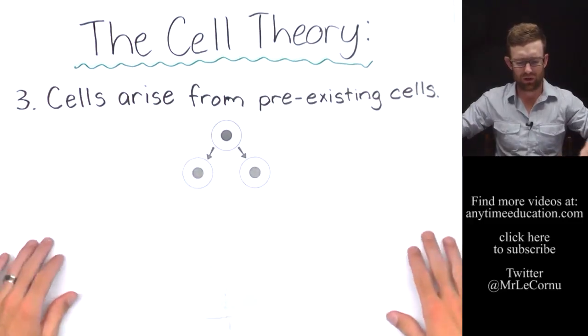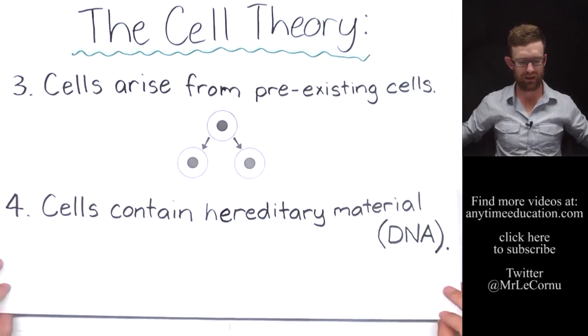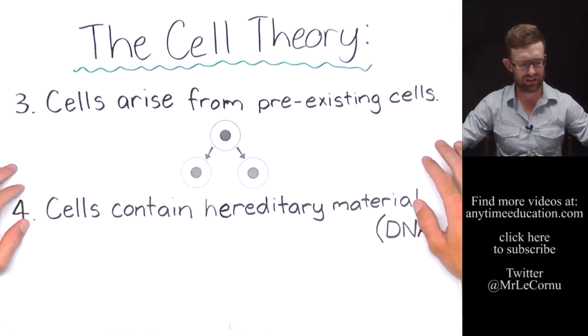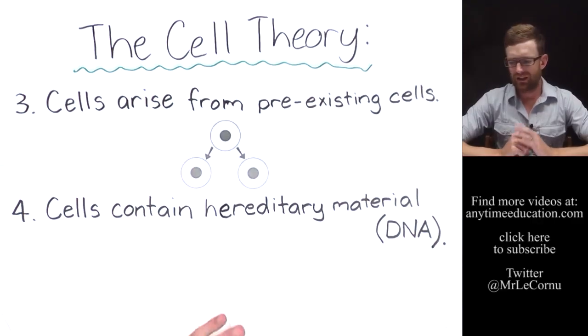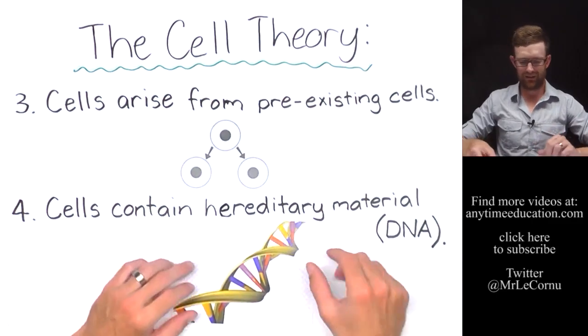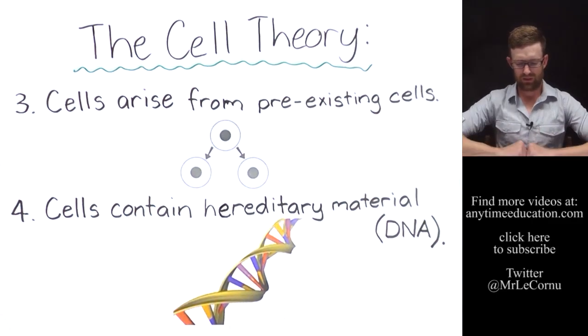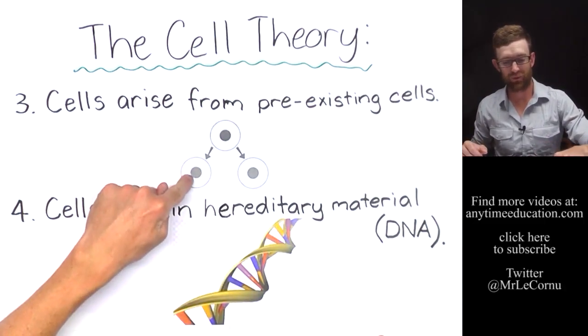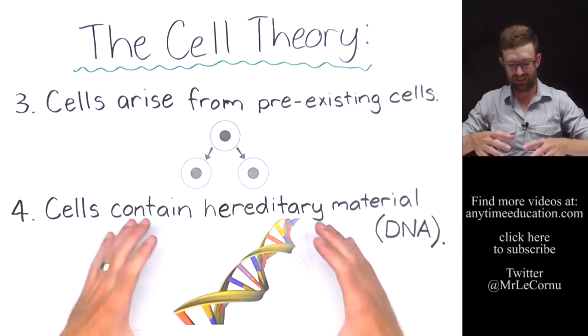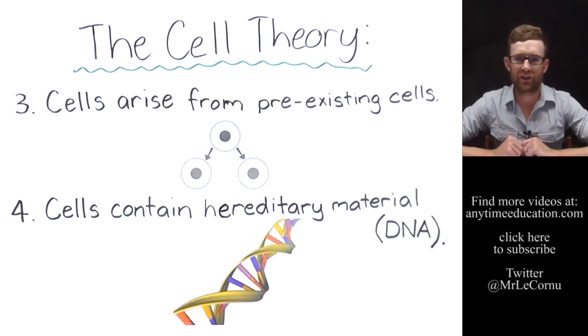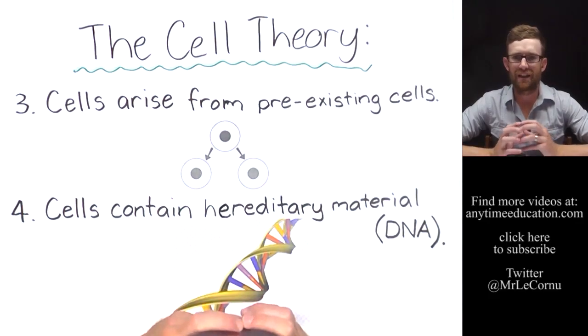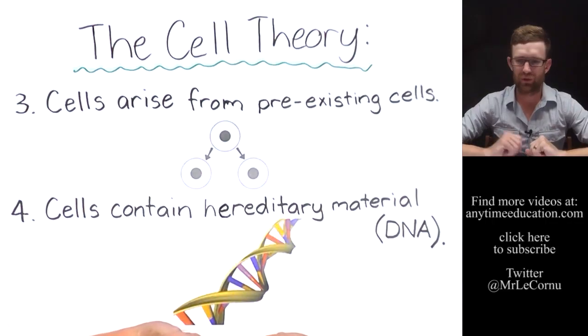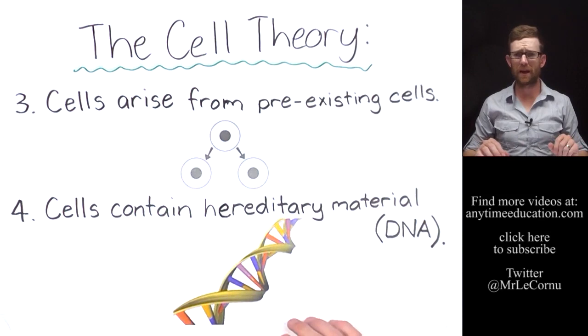Because of that, the fourth point comes about: cells contain hereditary material. Hereditary material means material that is passed on from one cell to the next, and the hereditary material we're talking about is DNA, which is a very important molecule in cells. There's a big large image of DNA there. Obviously it's been enlarged many times because if it was from this cell here, it's obviously much smaller. But we find DNA inside of cells, and that DNA contains the information and instructions that control all of the cell's activities. It's passed on from one cell to the next. That's why we call it hereditary material. So those are the four main points of the cell theory.